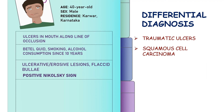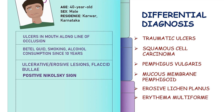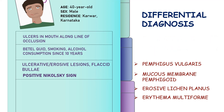These include pemphigus vulgaris, mucous membrane pemphigoid, lichen planus, and erythema multiforme. This removes the initial differentials like traumatic ulcers and squamous cell carcinoma from your think list.